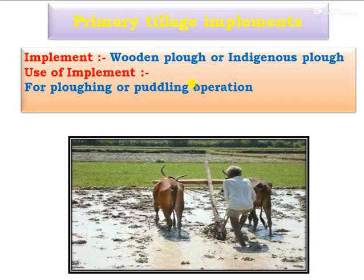You can see the first one: primary tillage implements. In primary tillage, the first one is the wooden plough, also called as indigenous plough. The use of this implement is generally for ploughing, and especially in the Konkan region, this implement is used for puddling operation. Especially in the lowland area, this implement is used for both ploughing and puddling operations.